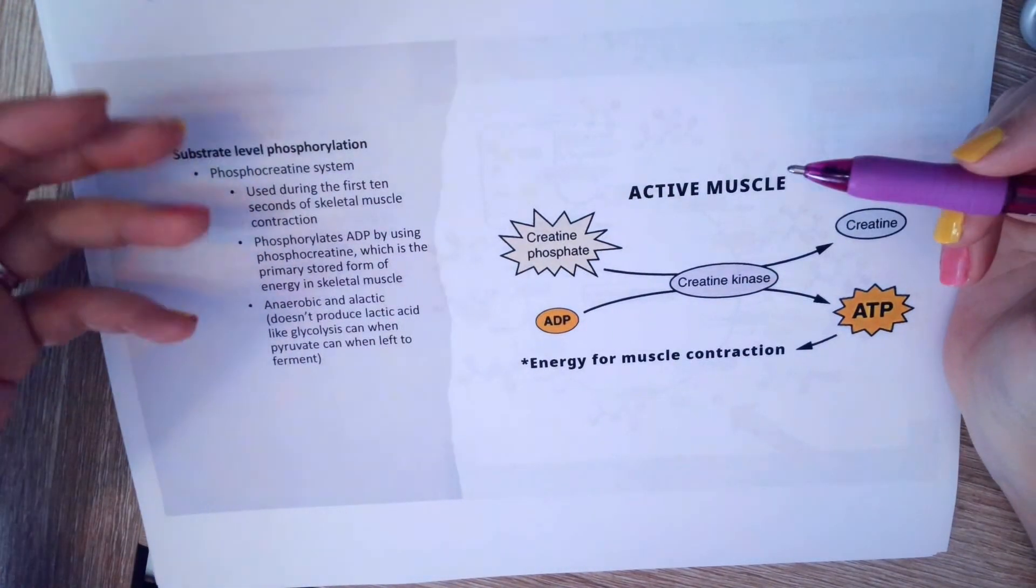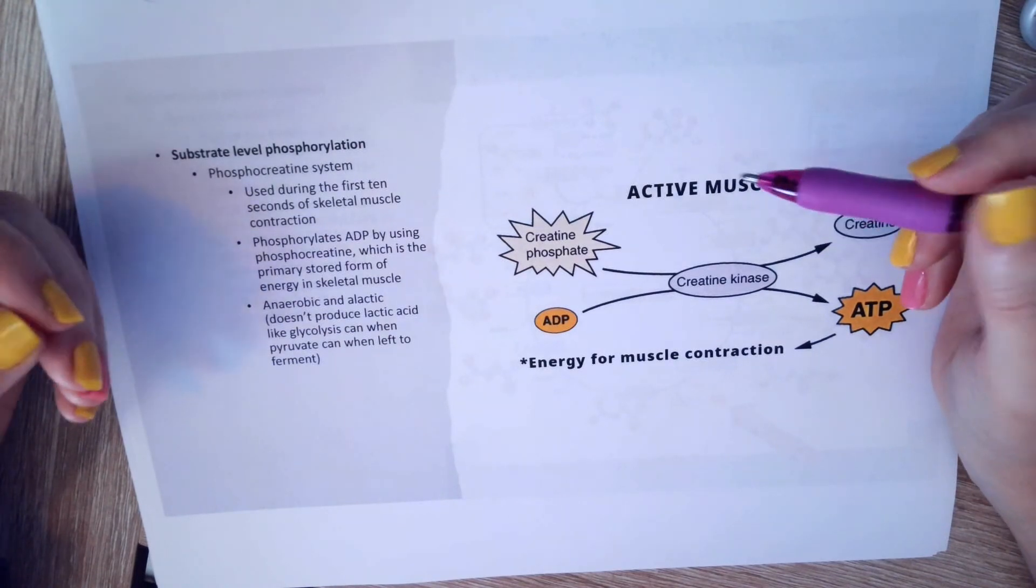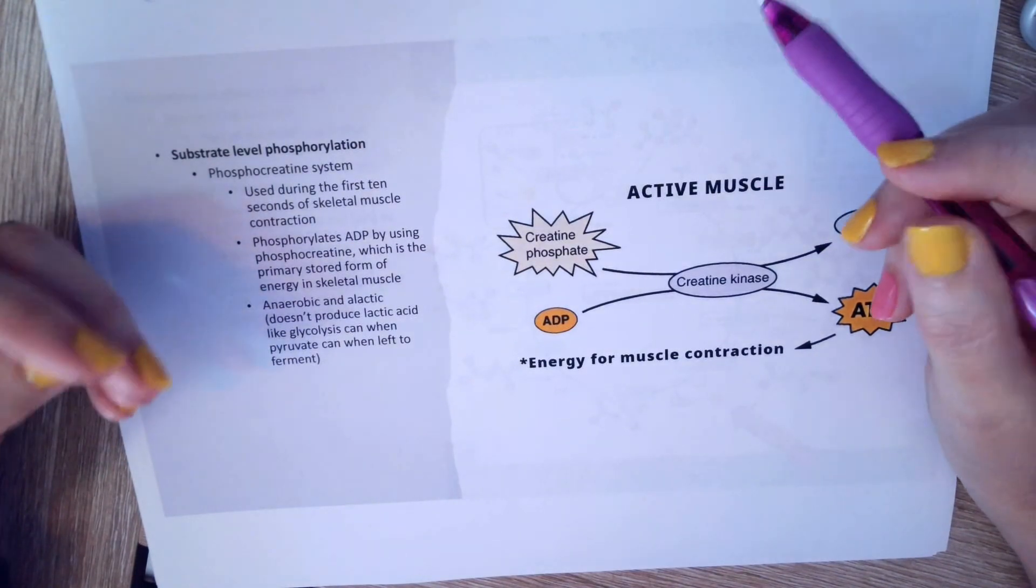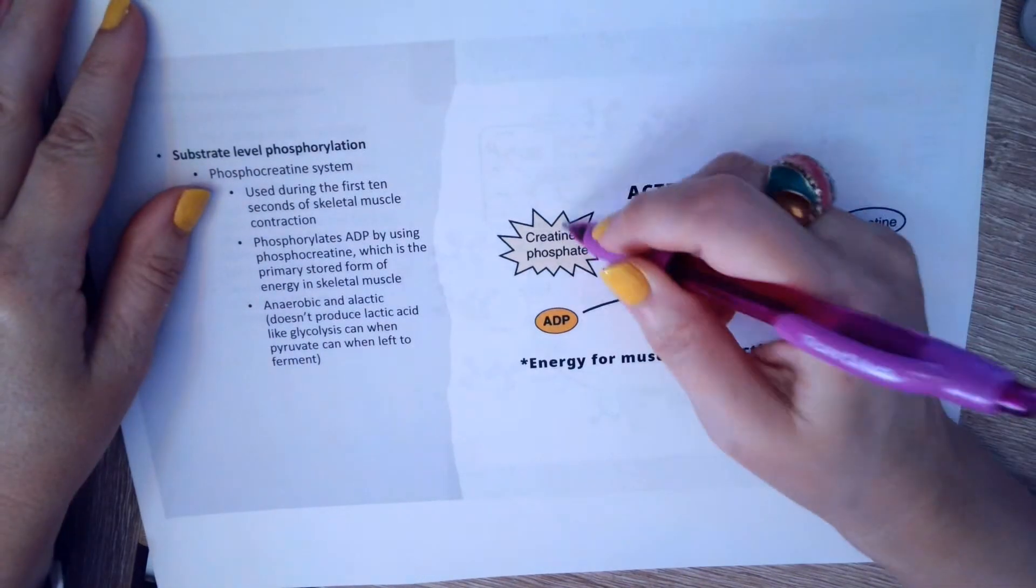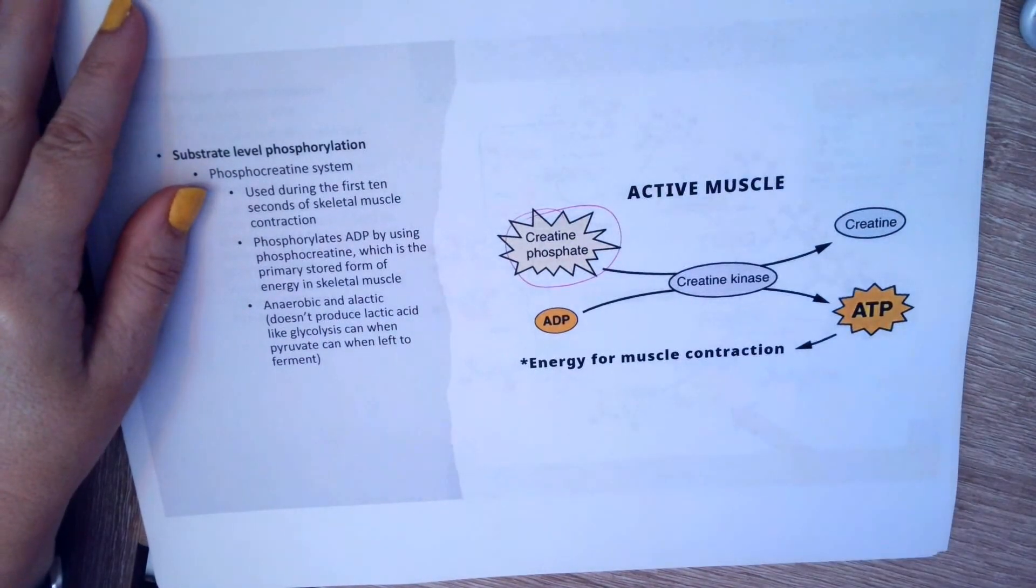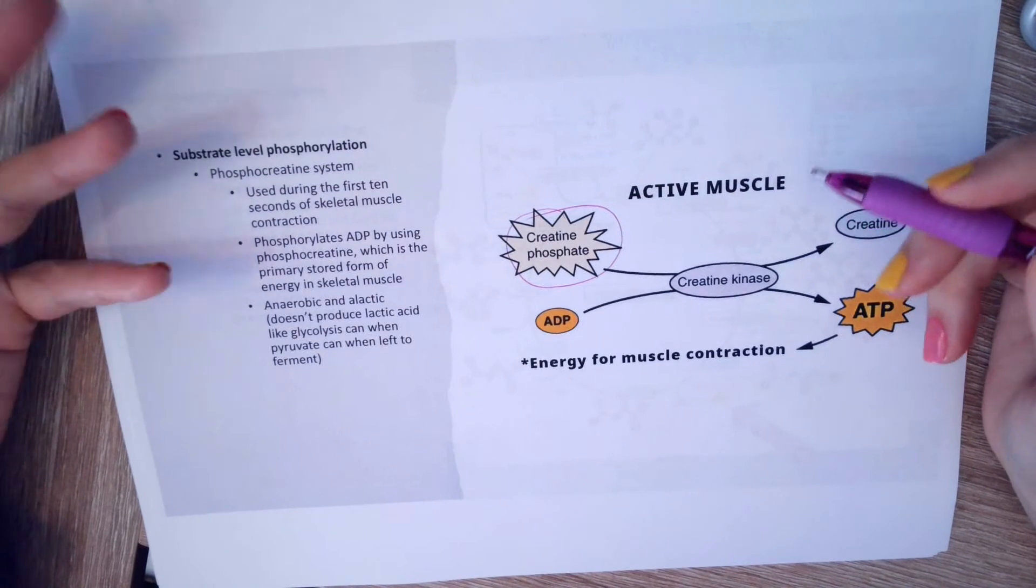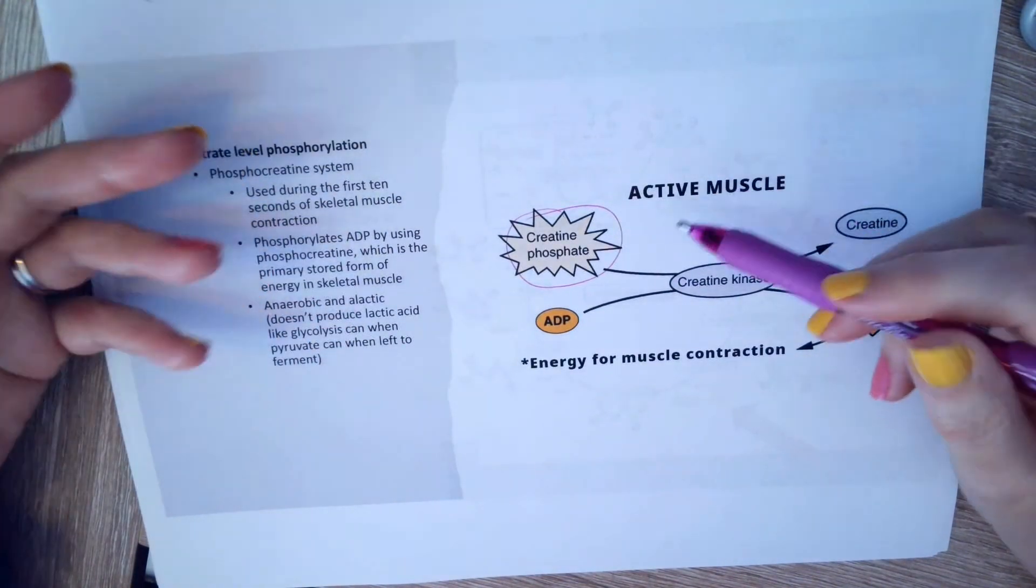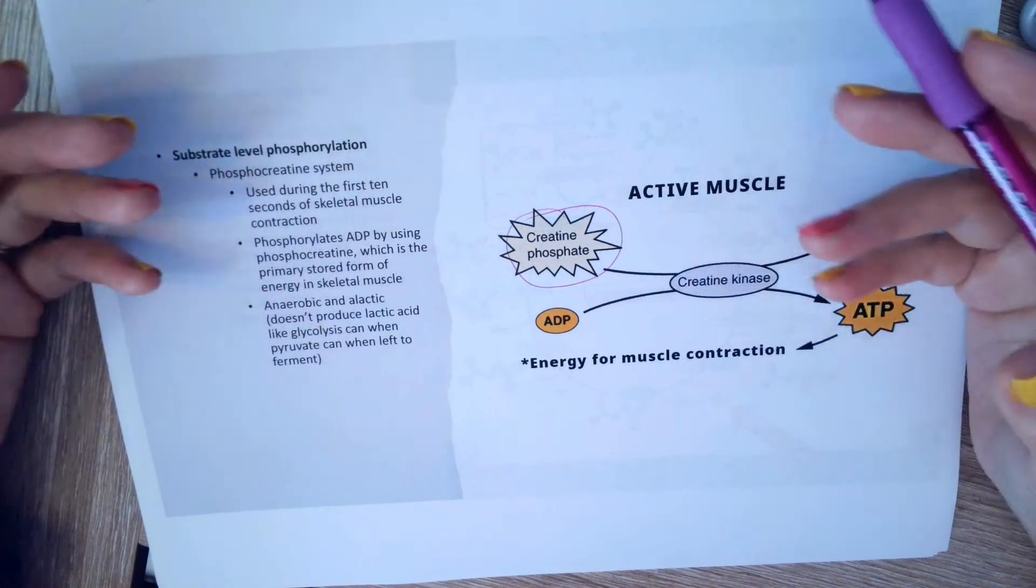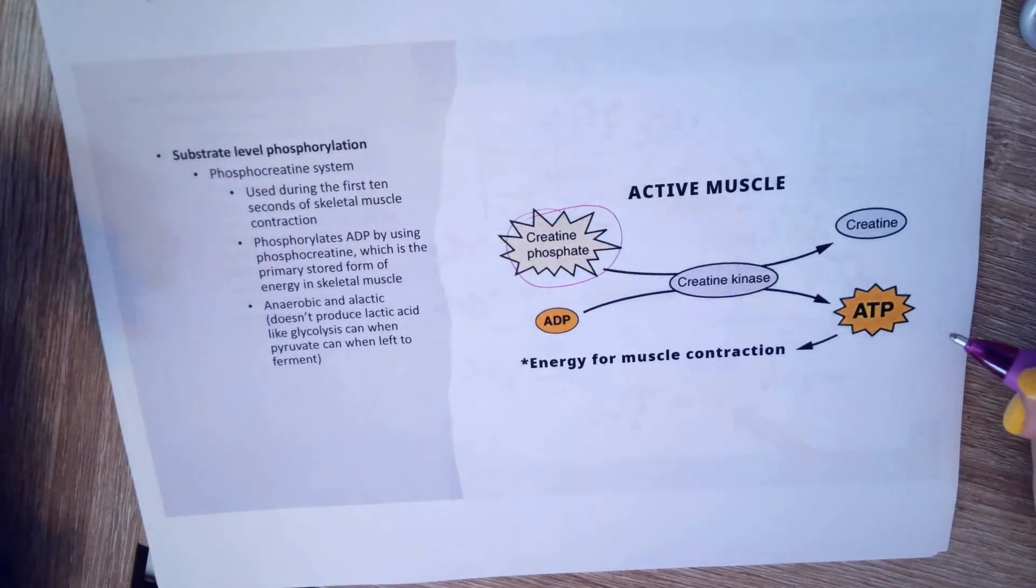You're not really using ATP so much. You use a little bit of ATP in skeletal muscle, but more you're using creatine phosphate. Creatine phosphate is the primary stored energy form of skeletal muscle, and it's just another molecule that you have done substrate-level phosphorylation on to make it an energy molecule, so that when you break it apart you can get the energy out of it.